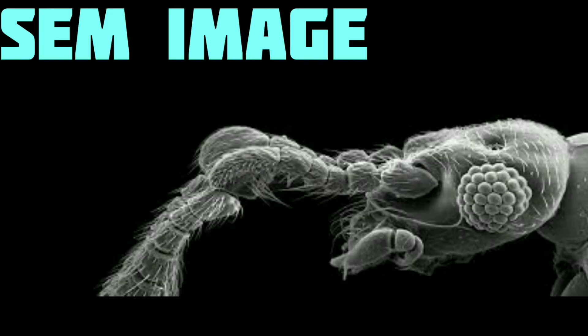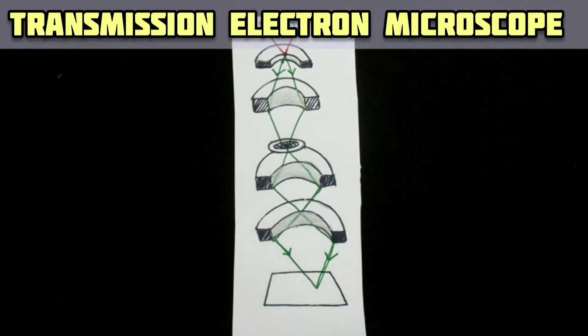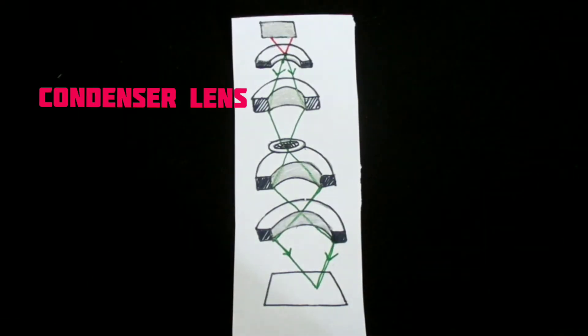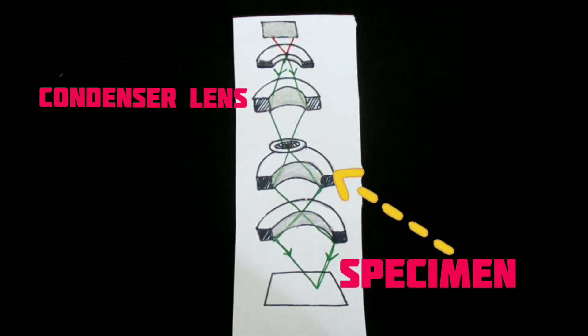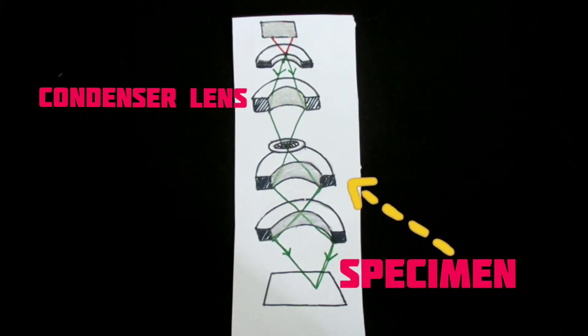In case of transmission electron microscope, a condenser lens focuses the electron beam onto the specimen and electrons are transmitted through the specimen. The portion of the beam absorbed by the specimen is minimal.